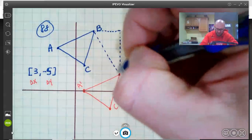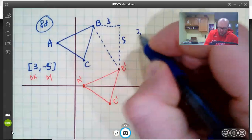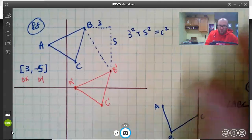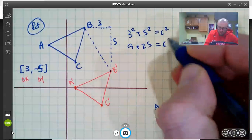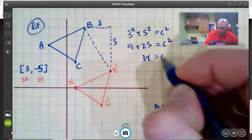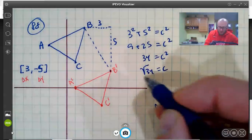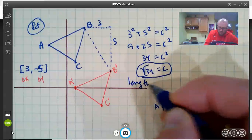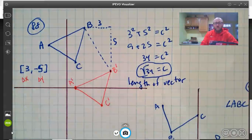So if I wanted to use Pythagorean theorem, I'd have 3 squared plus 5 squared is c squared. 9 plus 25 is c squared. 34 is c squared. So the length of the vector is square root of 34.